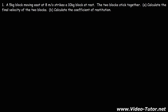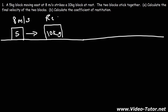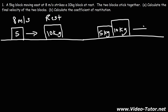Let's start with this one. A 5 kg block moving east at 8 m/s strikes a 10 kg block at rest. So let's draw a picture. This is the 5 kg block moving east at 8 meters per second, and it's going to strike a 10 kg block that is at rest. After the collision, these two blocks will be sticking together. In part A, we need to find the combined final velocity of the two blocks.